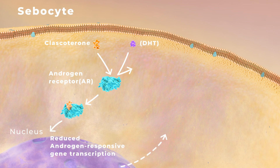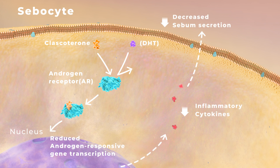Reduced transcription of androgen-responsive genes inhibits sebum production and activation of inflammation pathways, including those involved in pro-inflammatory cytokine synthesis.